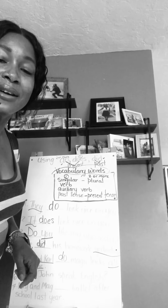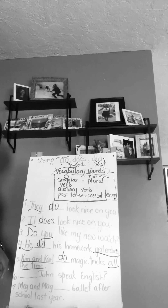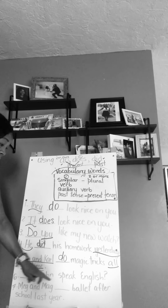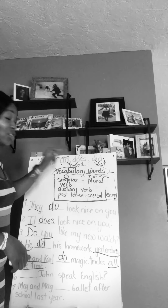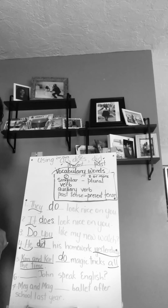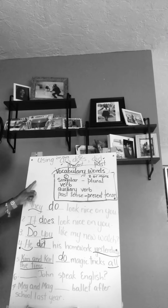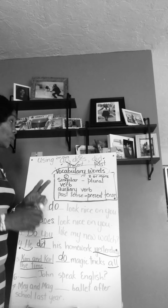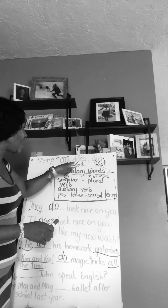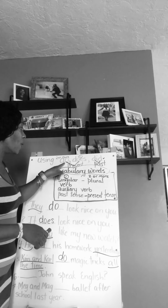Numbers six and seven are on you. Number six says: 'blank John speak English?' — that's a question. Are you going to say 'do John speak English,' 'does John speak English,' or 'did John speak English?' Pay attention: how many persons are we talking about? Is it plural or singular? Is the action happening presently or is it in the past? Focus on those two things to choose your answer.